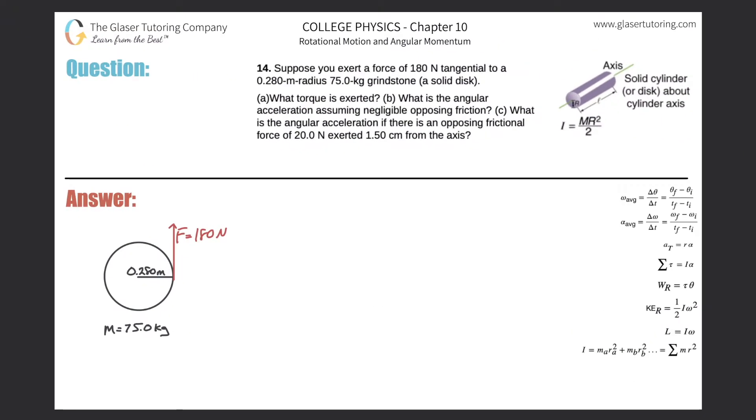Number 14. Suppose you exert a force of 180 newtons tangential to a 0.28 meter radius, 75 kilogram grindstone, which is a solid disk. Letter A: What torque is exerted? So here's a picture, here's the tangential force of 180 newtons, and this force is applied at a distance relative to the axis of rotation of this disk.